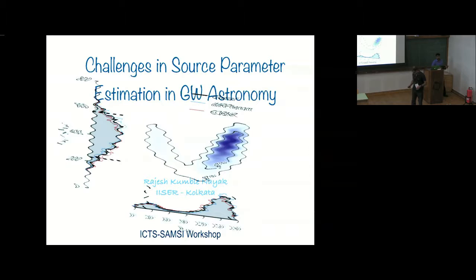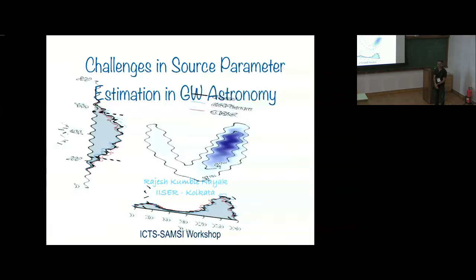I would like to thank the organizers for inviting me to this meeting. I'm going to talk about some of the challenges in source parameter estimation in gravitational wave astronomy. I'm Rajesh Naik from ISAR, Calcutta.